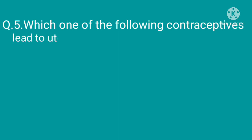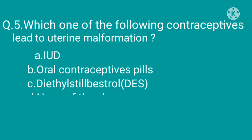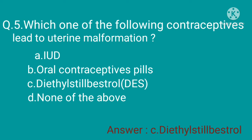Question 5: Which one of the following contraceptives leads to uterine malformation? Option A: IUD, option B: oral contraceptive pills, option C: diethylstilbestrol, option D: none of the above. The correct option is option C, diethylstilbestrol — also known as DES — which is a non-steroidal estrogen medication. Nowadays it is rarely used.